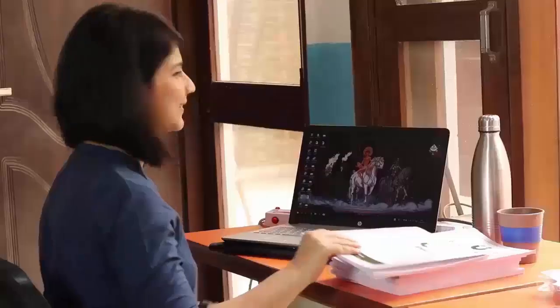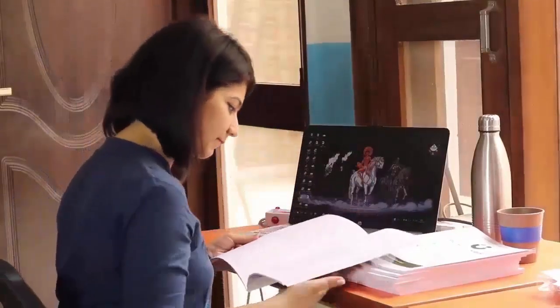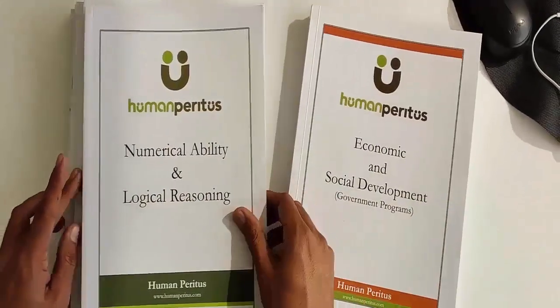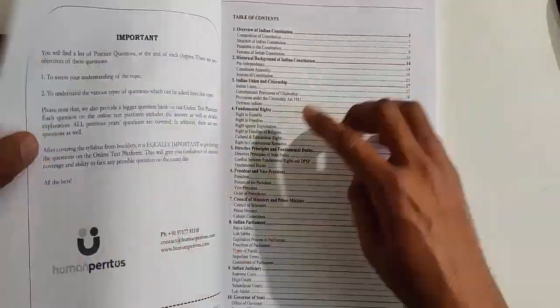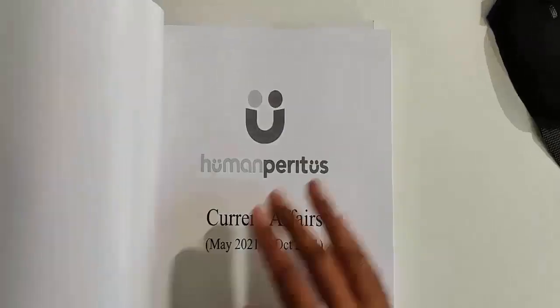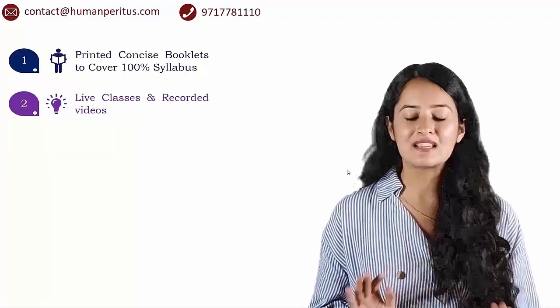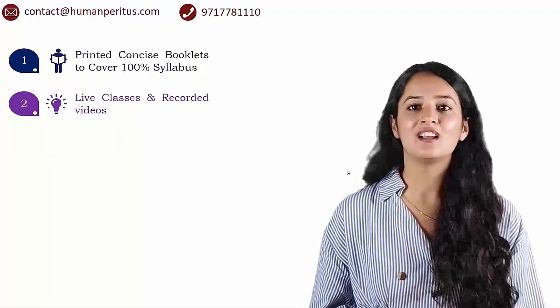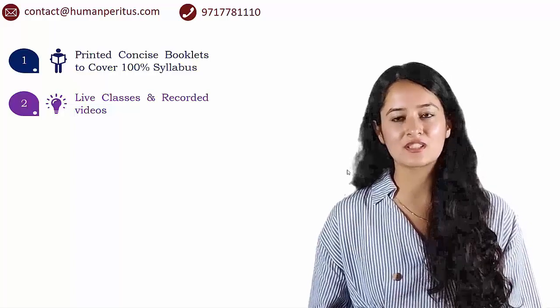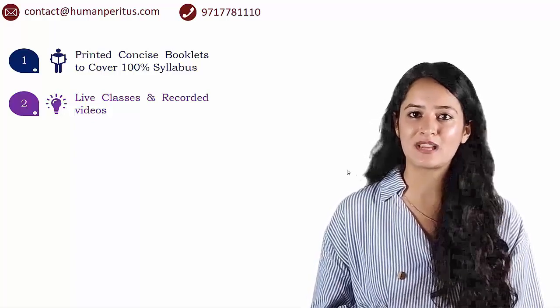Component one: we will send you printed booklets via courier. These concise booklets will help you cover the entire syllabus very fast, without running after multiple sources, providing the most comprehensive coverage — current affairs included. It is our responsibility to provide current affairs updates till the exam date. Component two: our subject matter experts will teach you in online live classes — not just recorded videos, but live classes where you can talk to the teacher and ask doubts. Recorded videos of all classes are also made available for working professionals who may miss a few sessions.